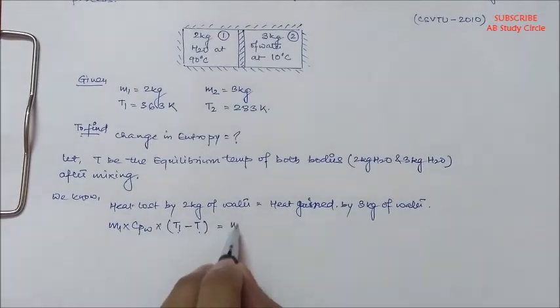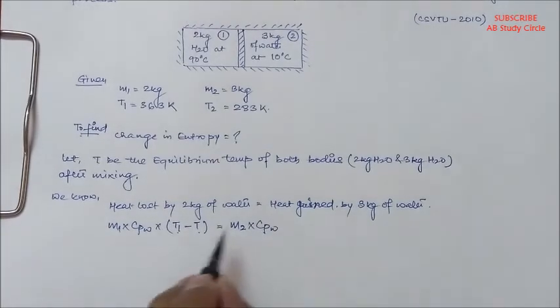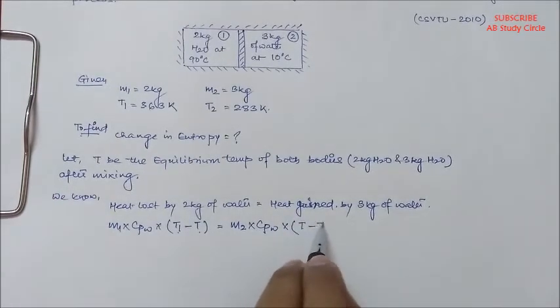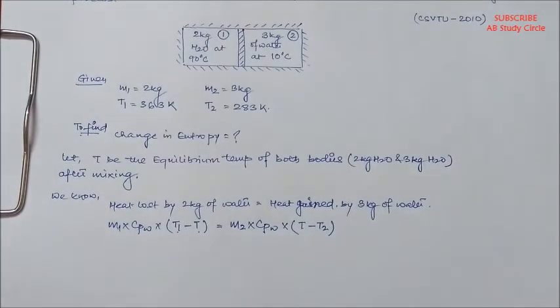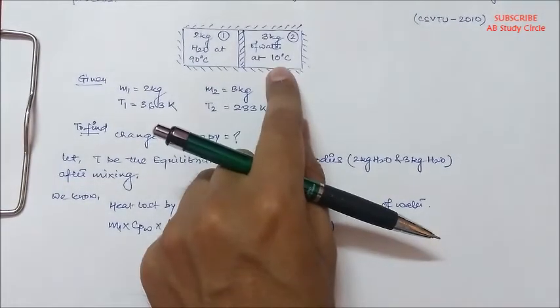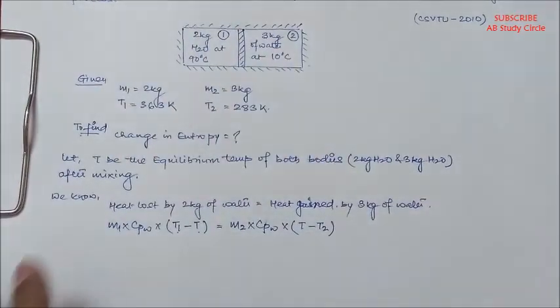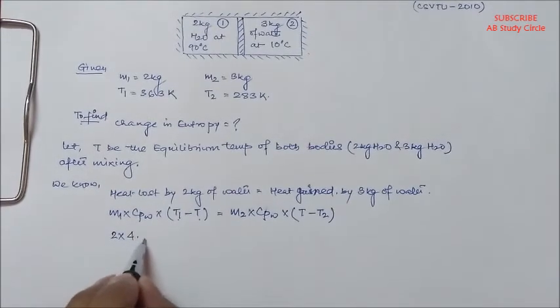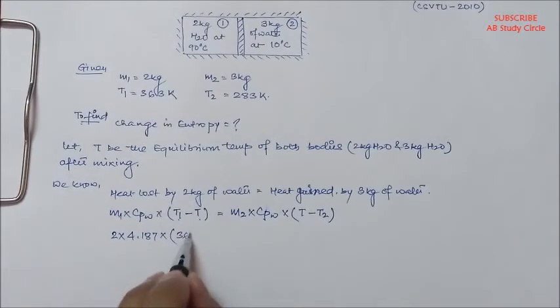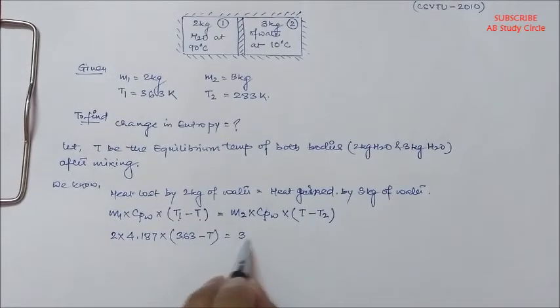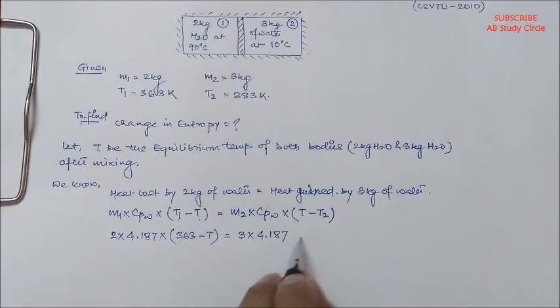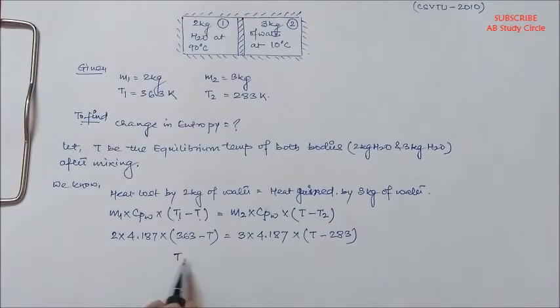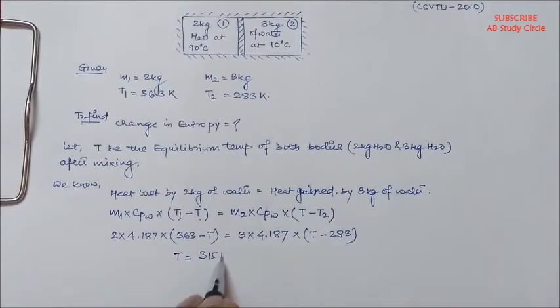Now let's put the given values: we have 2 × 4.187 × (363 - T) = 3 × 4.187 × (T - 283). And when you calculate this, T you will get as 315 Kelvin. We got this equilibrium temperature.